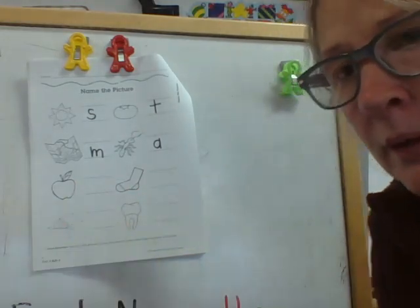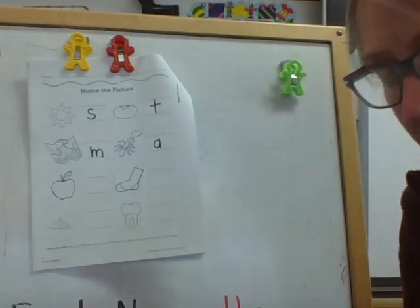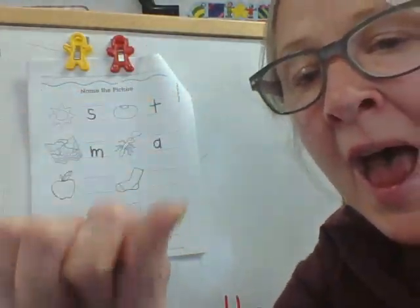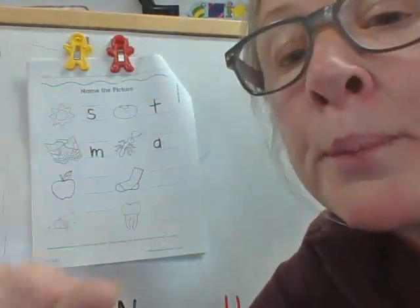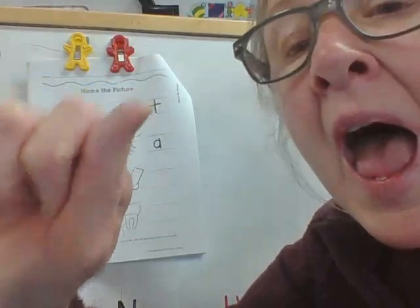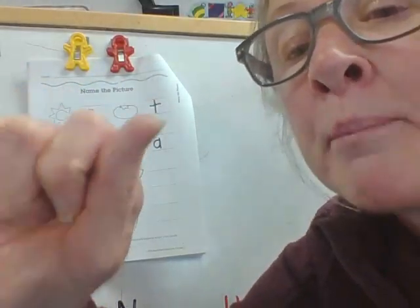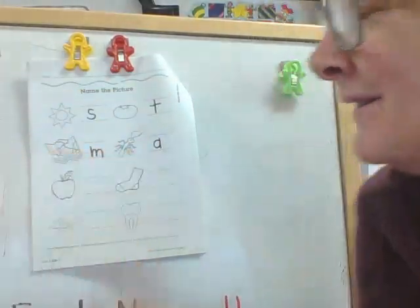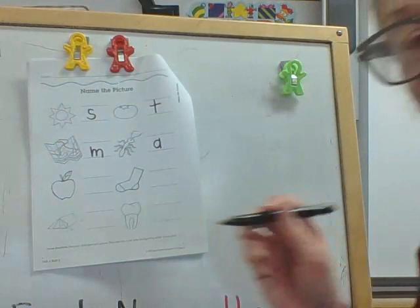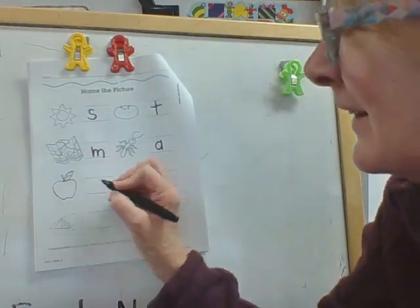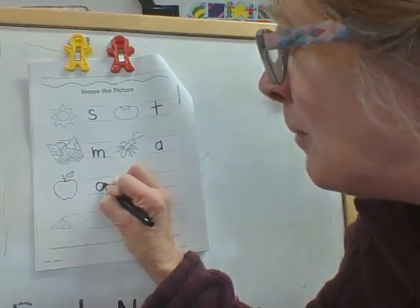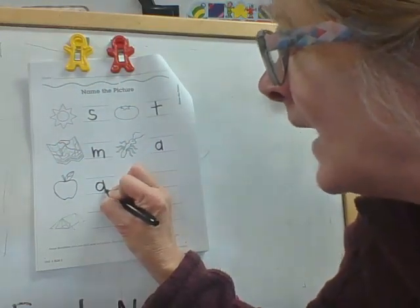This is an apple. Are you ready to bounce? Ah, ah, apple. Ah, ah, apple. Ah, ah, apple. Letter A. That's right — letter A. Little curve up and down.